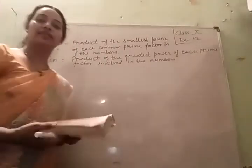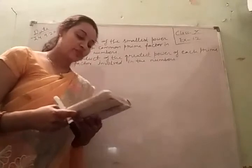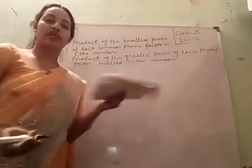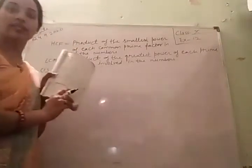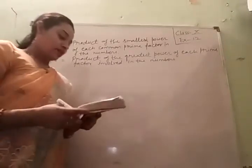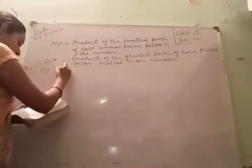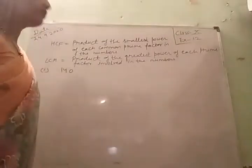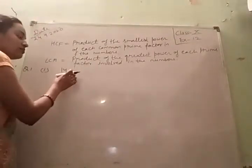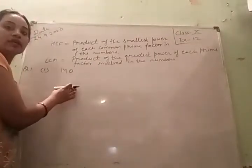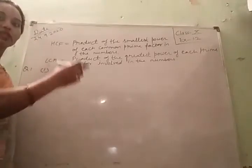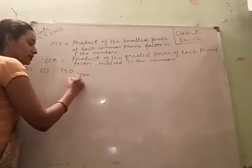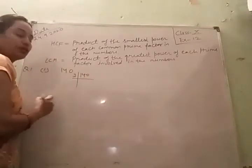First question of Exercise 1.2: Express each number as a product of its prime factors. This is your NCERT book. We need to express the number as a product of prime factors — find the prime factors of each number. The smallest prime number is 2.